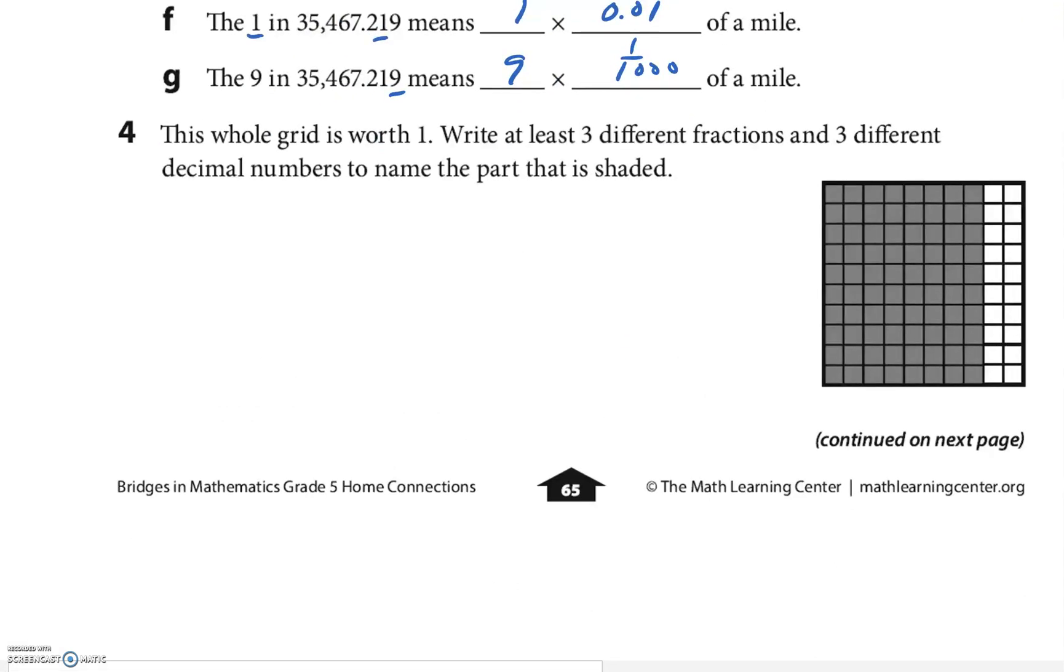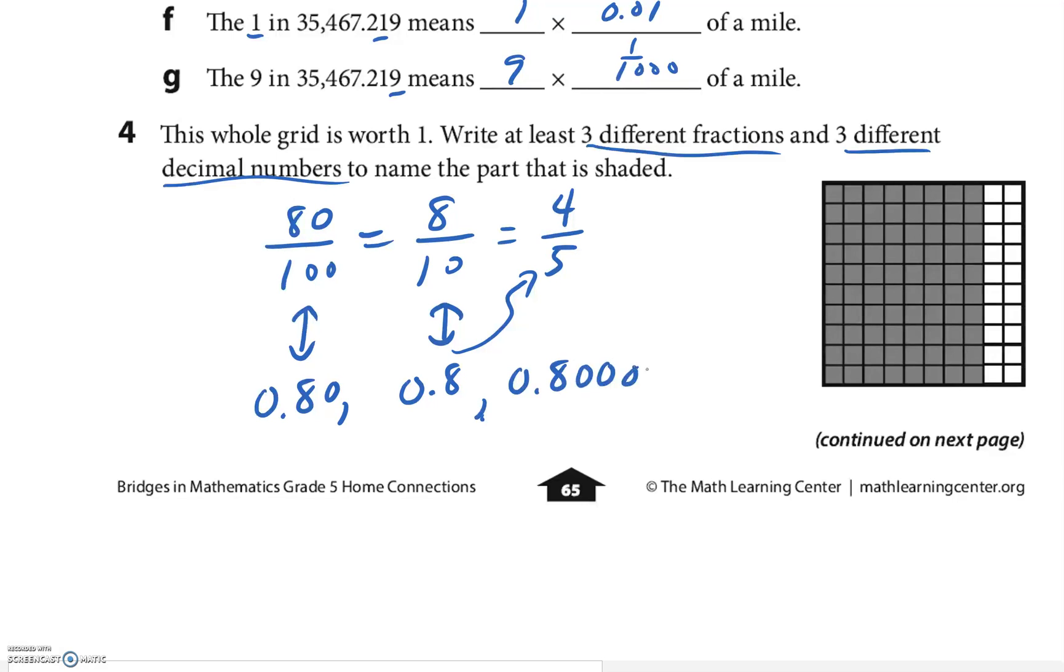The whole grid is worth 1, write at least 3 different fractions and 3 different decimals. So start with the fractions. The whole thing is 10 by 10, that's 100. Looks like there's 80 of them, so here's my first fraction, 80/100. Same fraction, just divided by 10, is 8/10, and then I could half it, 4/5. The decimals, the first one that's equivalent is 0.80, then to match this one is 0.8, and then I can attach zeros, I can attach as many as I want.